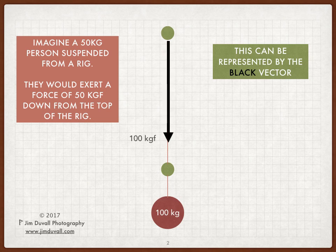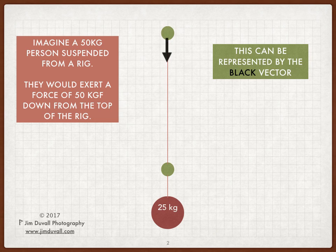If we doubled the mass of the person, the black vector would be drawn twice as long. Conversely, if we reduced their mass to 25 kg, we would draw the vector half as long. Let's just go back and use our original 50 kg person for this video.